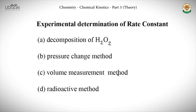Now we are going to study how to determine experimentally the rate constant. There are 4 methods: first is decomposition of H2O2, second is pressure change method, third is volume measurement method, and fourth is radioactive method.